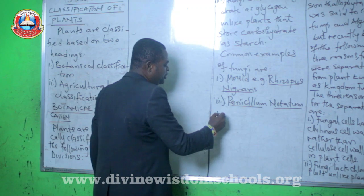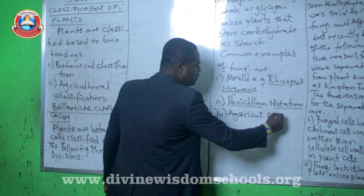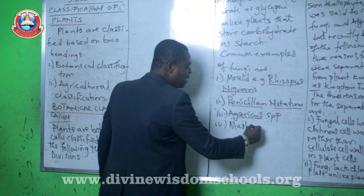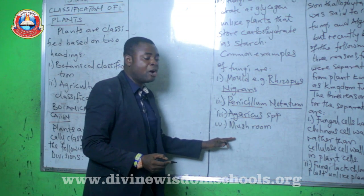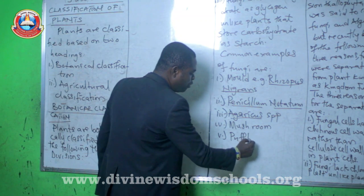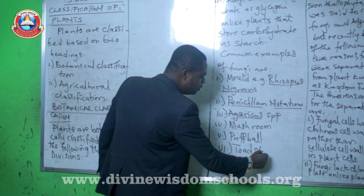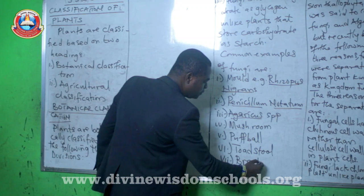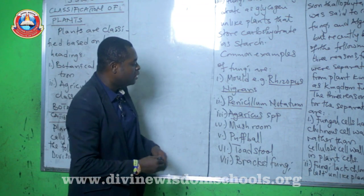You also have Agaricus species. Apart from that, you have mushroom — which looks like an umbrella and grows on rotting wood — you have puffball, toadstool, and bracket fungi. All these are examples of fungi.